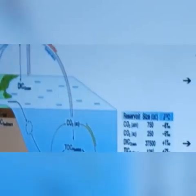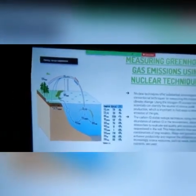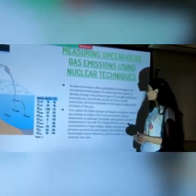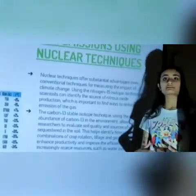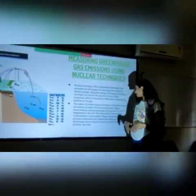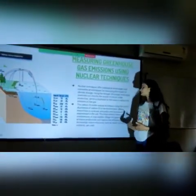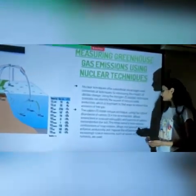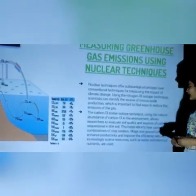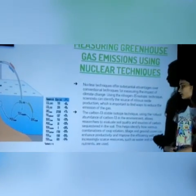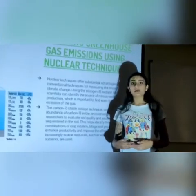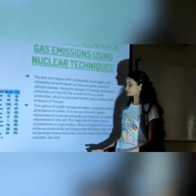Using the natural abundance of carbon-13 in the environment, it allows researchers to evaluate soil quality and sources of carbon sequestered in the soil. This helps identify how various combinations of crop rotations, tillage, and cover crops can enhance productivity and improve the efficiency with which increasingly scarce resources such as water and chemical nutrients are used.